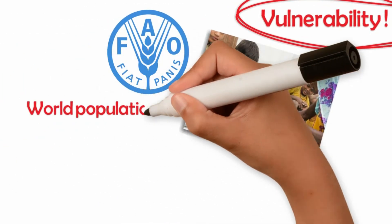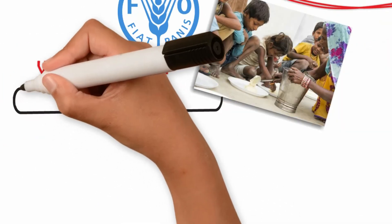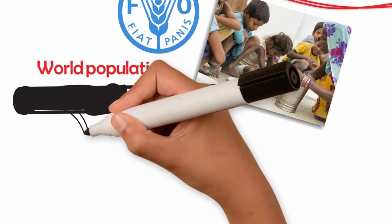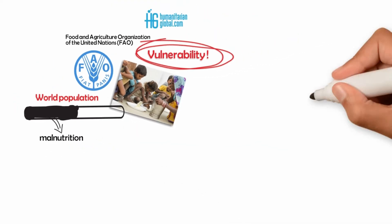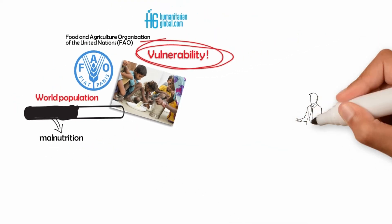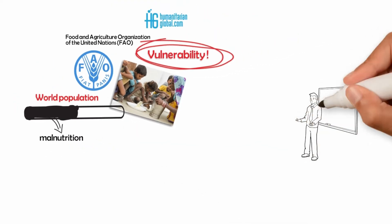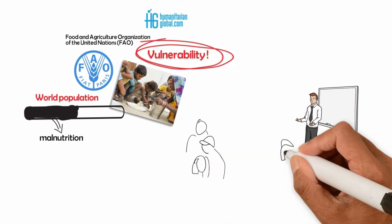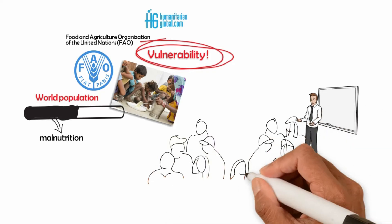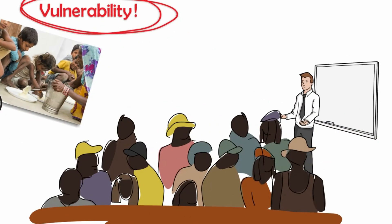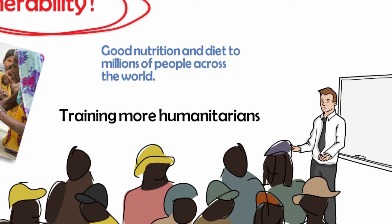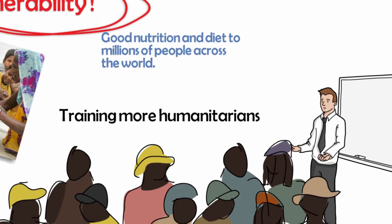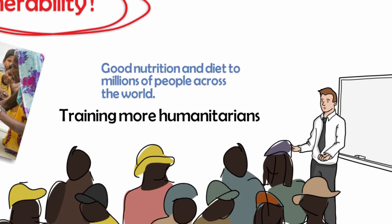Nearly half of the world's population suffers malnutrition, yet there is little official development assistance that goes to nutrition. Hence, there is a need for training more humanitarians to help them acquire the right knowledge and understanding needed to administer good nutrition and diet to millions of people across the world.